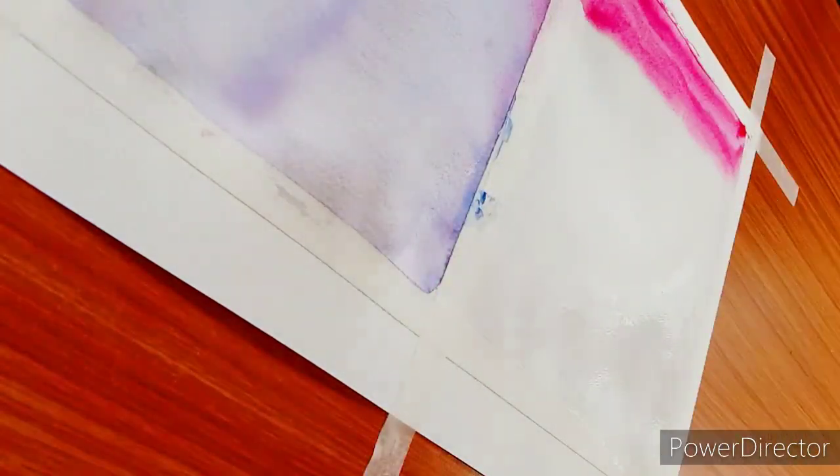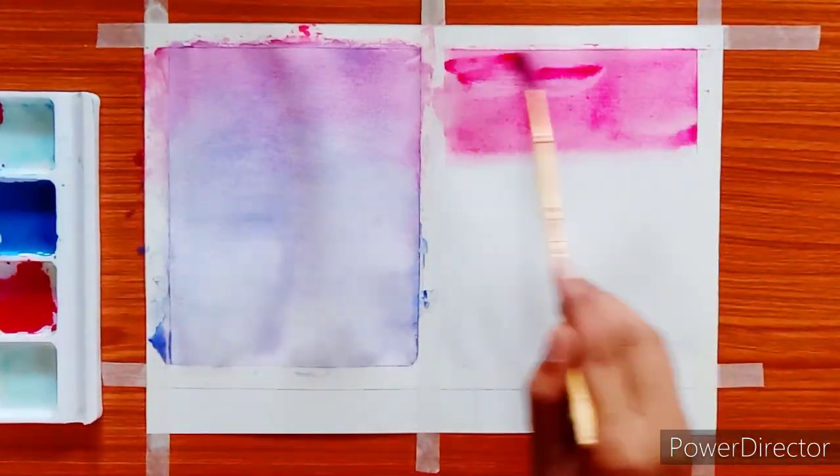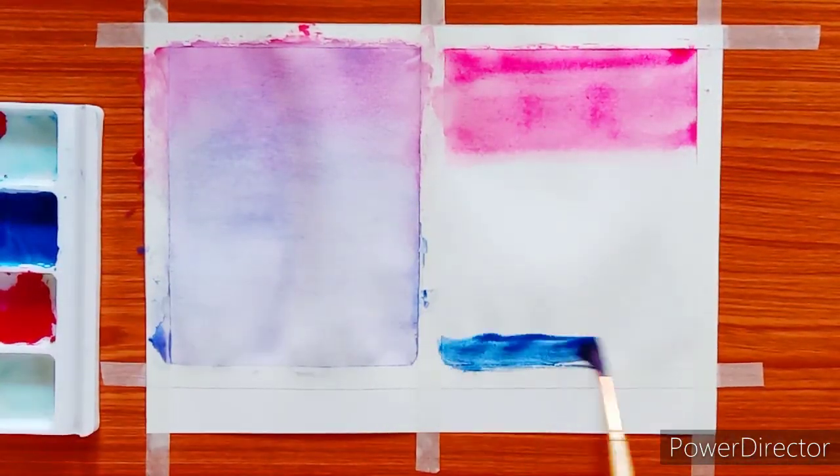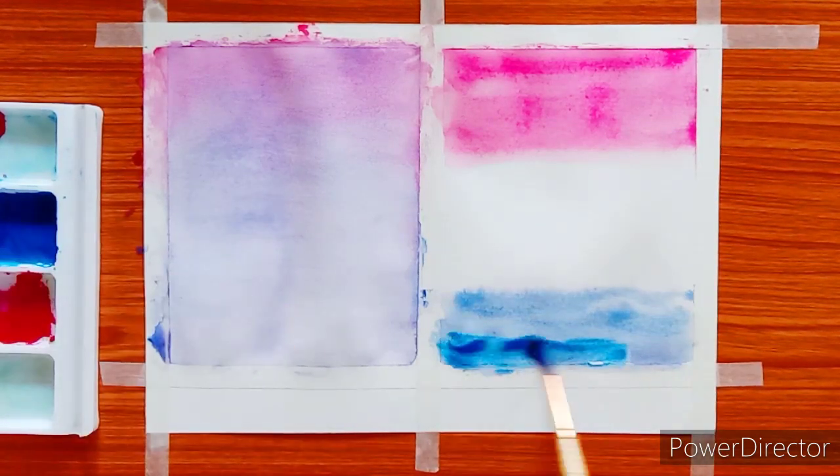You usually start off by applying water on the paper that is enough to bring a gloss on it, and then you start applying the colors. The colors usually start blending on their own when you apply enough amount of water for them to smudge and not to float on the entire paper.